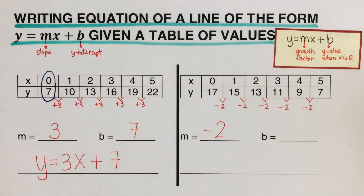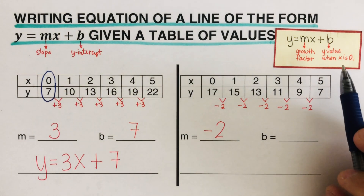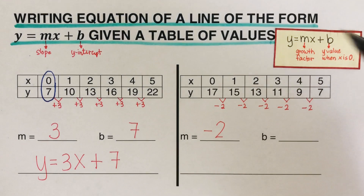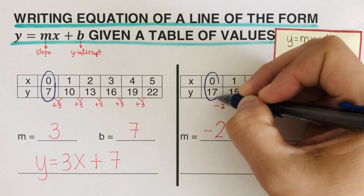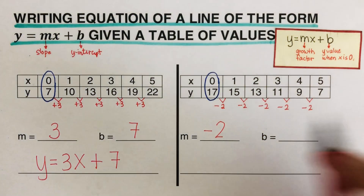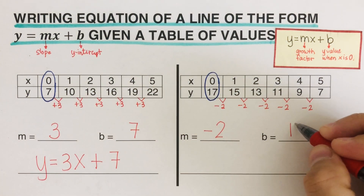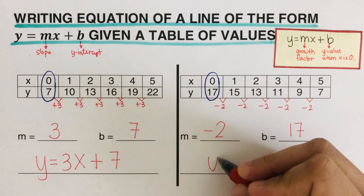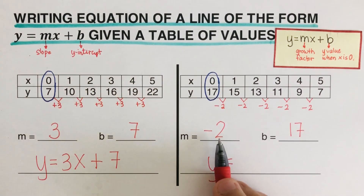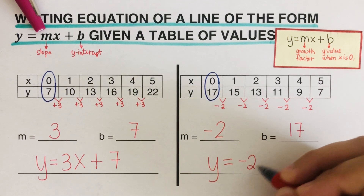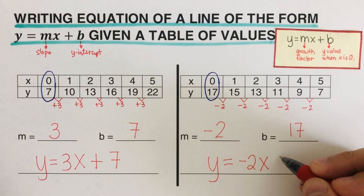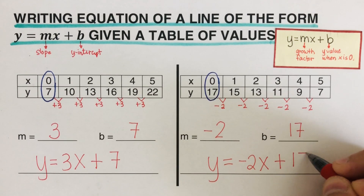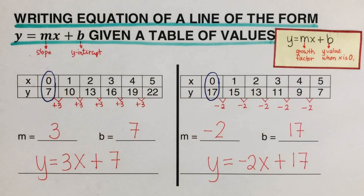B is the y-value when x is 0. We look for x equal to 0 and find y equals 17. So the equation is y equals negative 2x plus 17. Did you get the same answer?